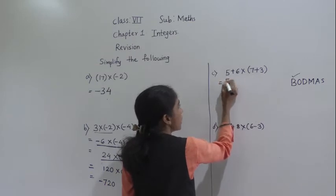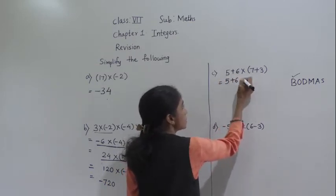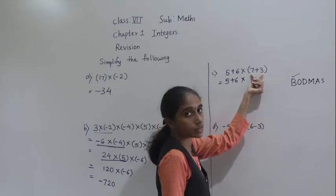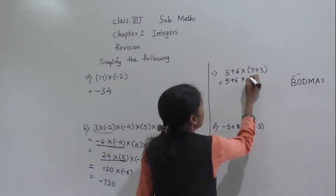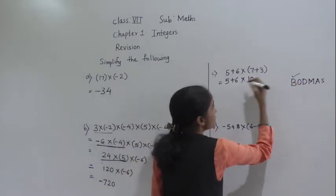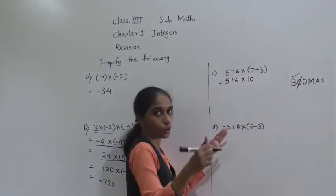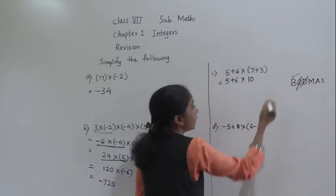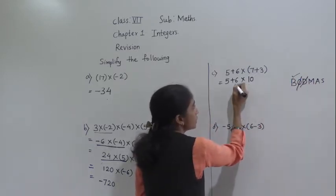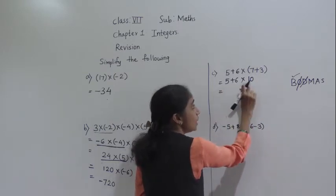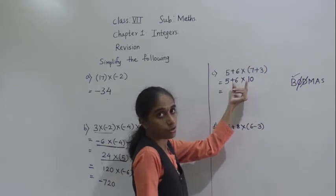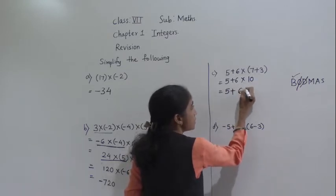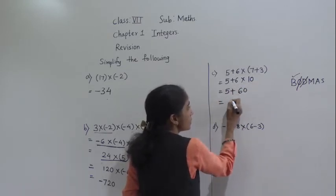B is bracket. So first what we have to do? We have to solve the bracket first. So remaining numbers we write as it is: 5 plus 6 into — now we solve the bracket first, so 7 plus 3. Operation in the bracket is addition, so 7 plus 3 is 10. Bracket over. D means division — division is not given. Then M: M is multiplication, multiplication is given here. So first we solve multiplication: 6 tens are 60. And 5 plus 60 is 65. So the answer is 65.